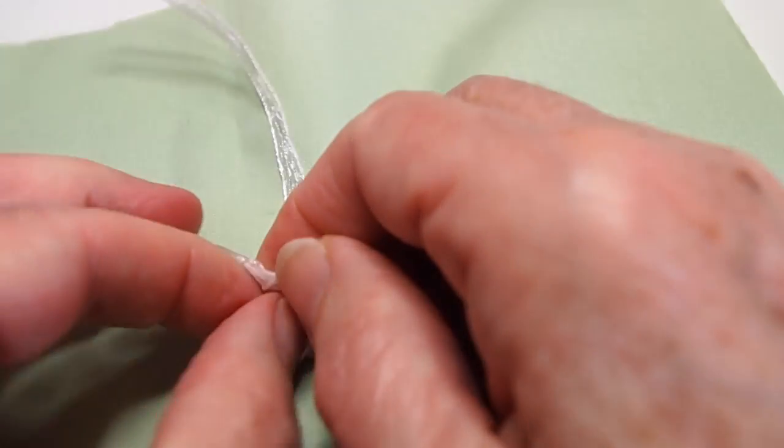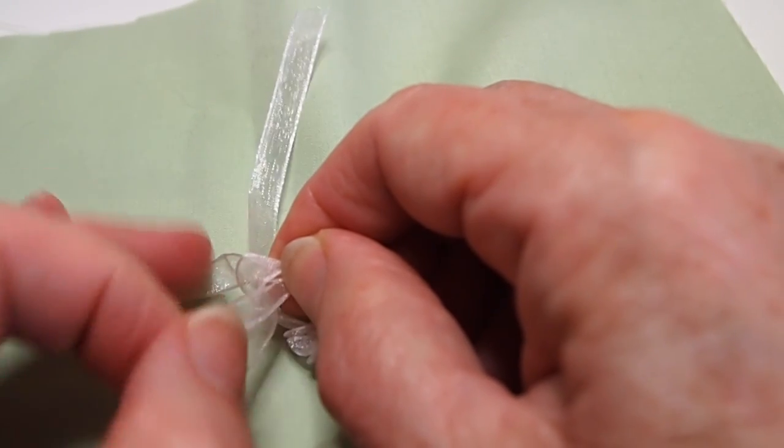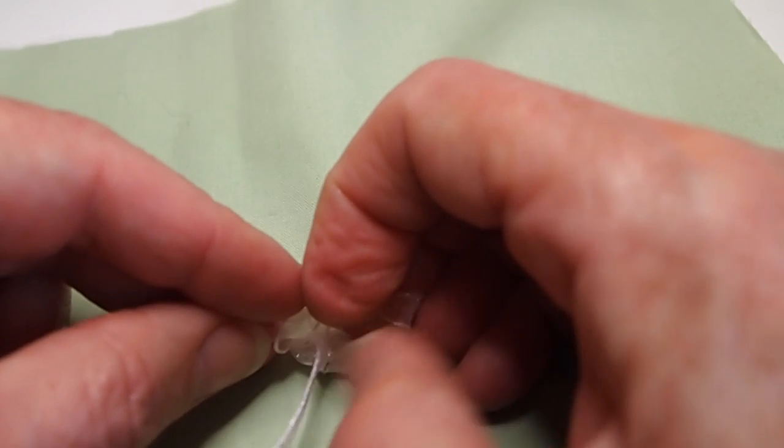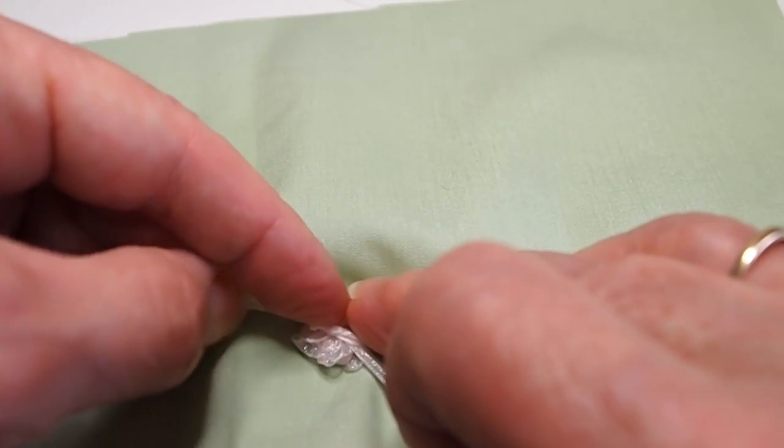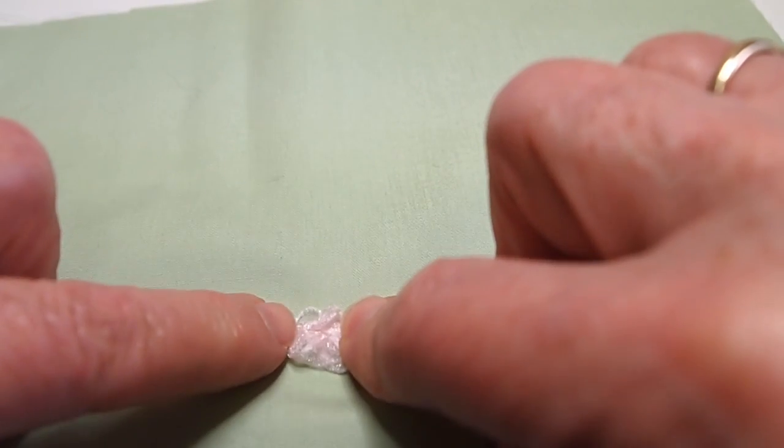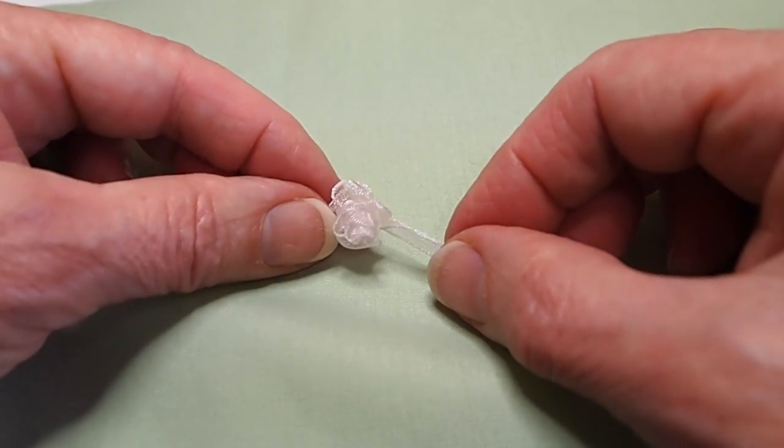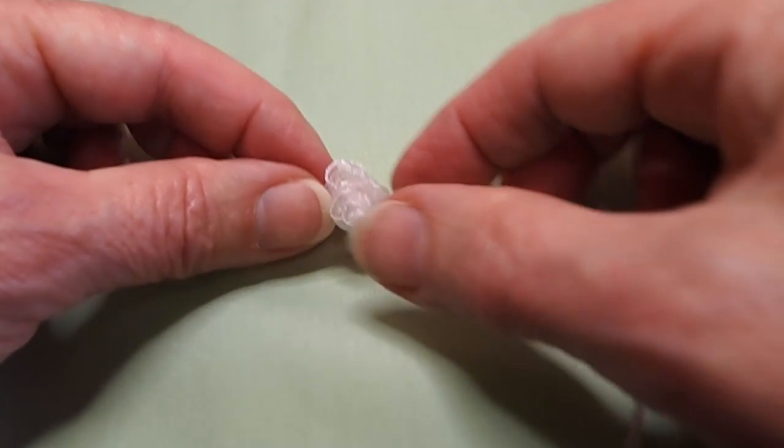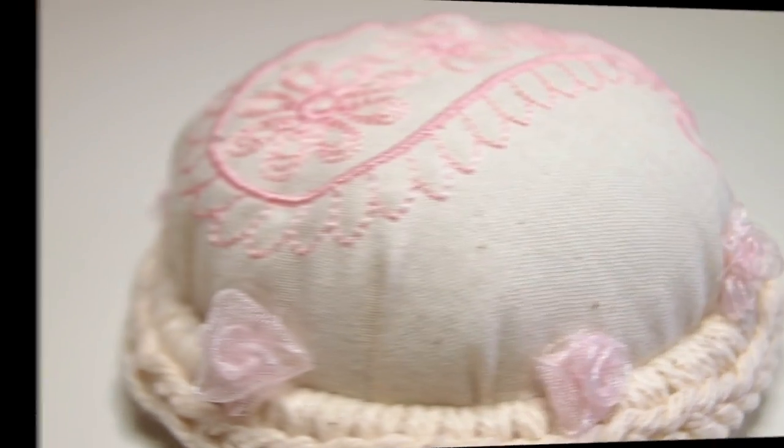Once you do that, what I did is took a needle and thread and ran it through the knot from the top to the bottom of the flower just to add some extra security, because the knot doesn't always hold. Or you can use a glue gun and put a little bit of glue on the back. You can also attach it to your pin cushion either using glue or sewing. I stitched mine on.